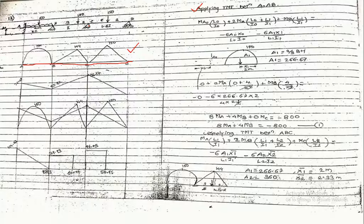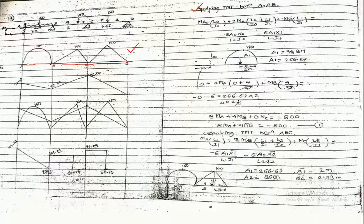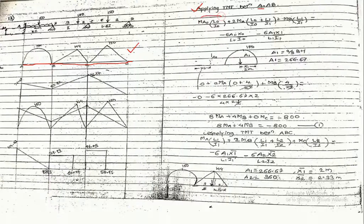First, we consider an imaginary span A0 before support A, with length L0, which is called the zero span. We consider this imaginary span while applying the 3-moment theorem. Since it is an imaginary zero span, the value of A0 is zero. So applying the 3-moment theorem for span A0AB, the term MA0 × L0/I0 equals zero.